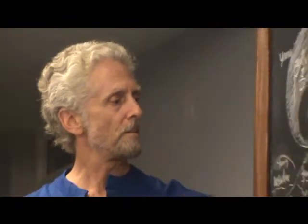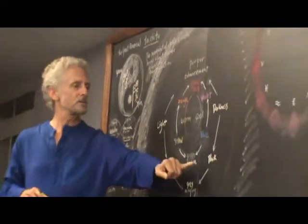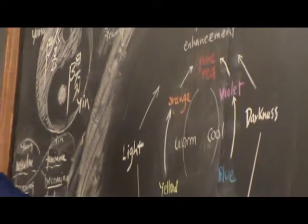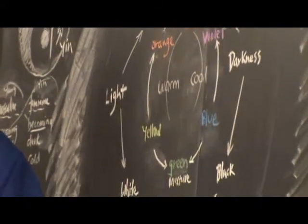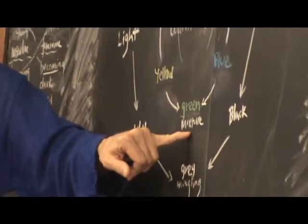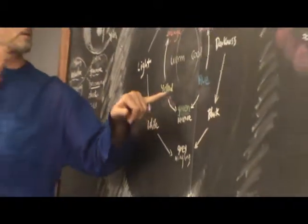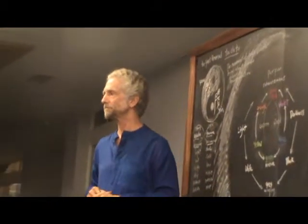This is just a diagram to help us orientate ourselves in pure logic — how light and darkness express through white and black. They can mingle to create gray, and they can mix to create green from these sides of yellow and blue. Yellow and blue.